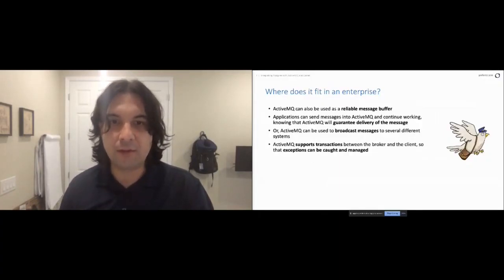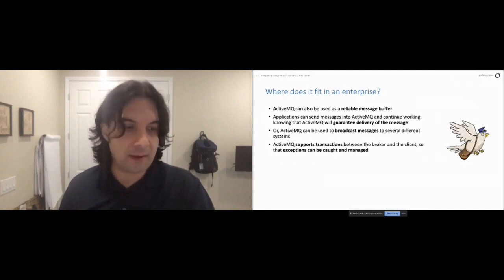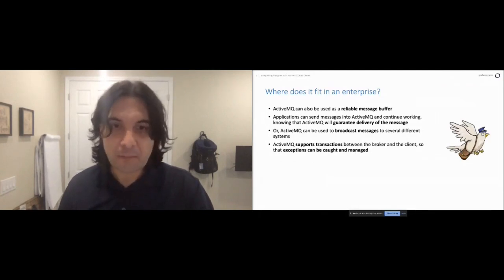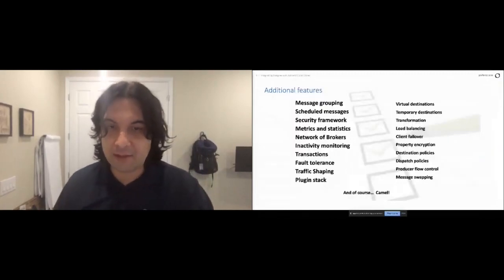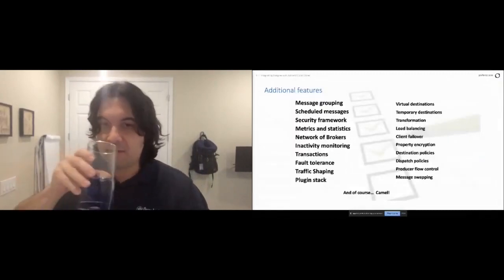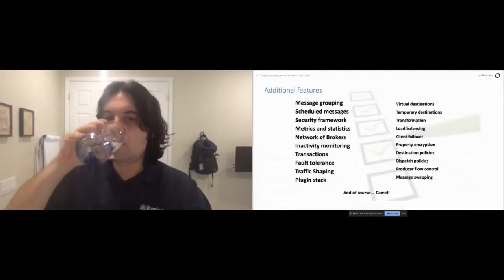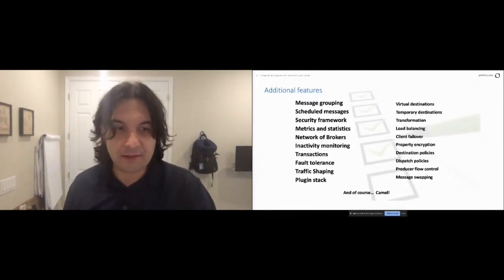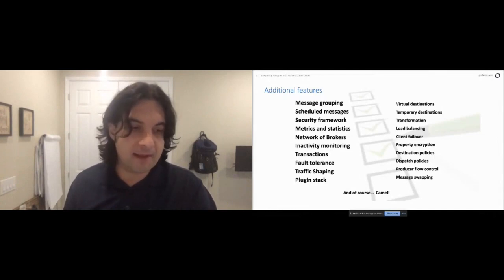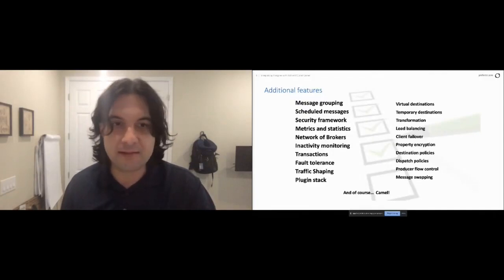I hesitate to call it just a JMS broker — I think a lot of people don't really understand what a sophisticated product ActiveMQ has become and what additional framework is available to you outside of what's denoted by JMS. By the way, ActiveMQ does come with a limited implementation of Camel running directly inside it — it's good for prototyping and very light message routing, but you wouldn't want to use it for large scale.